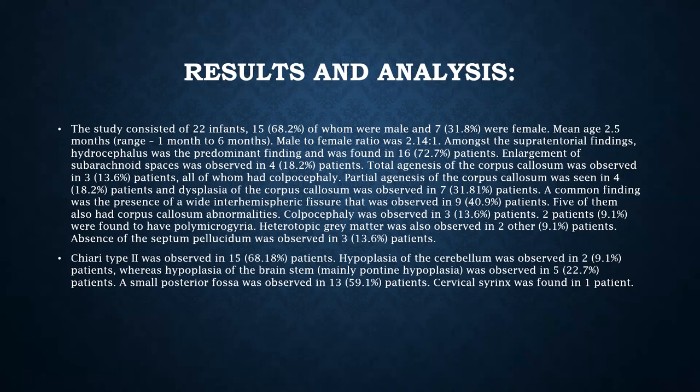Colpocephaly was observed in 3 patients and 2 patients were found to have polymicrogyria. Heterotopic gray matter was observed in 2 other patients and absence of septum pellucidum was observed in 3 patients. In the infratentorial findings, Chiari type 2 was observed in 15 patients, hypoplasia of the cerebellum in 2 patients, hypoplasia of the brainstem in 5 patients, a small posterior fossa in 13 patients, and cervical syrinx in 1 patient.